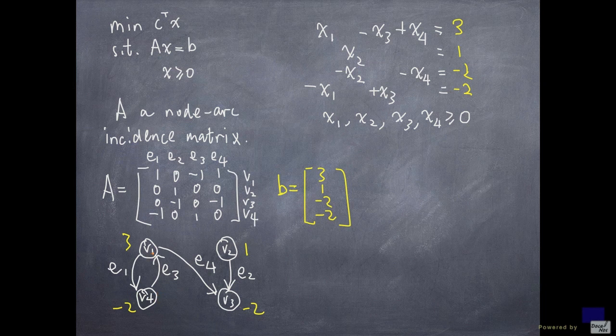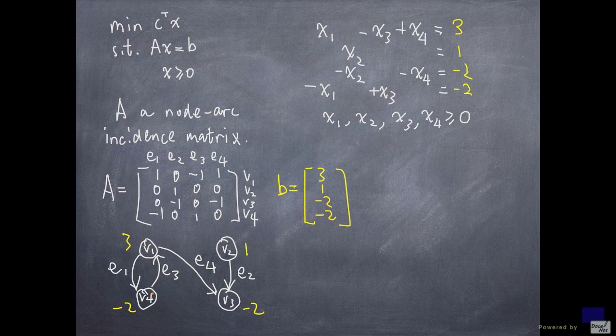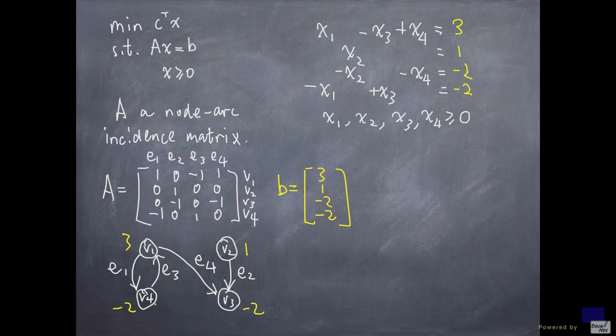And that means we can think of positive numbers, like 3, to be surpluses at the associated nodes. Whereas negative number, we can regard it as a demand. And we want to be able to ship things around on these arcs so that these surpluses and these demands are met.